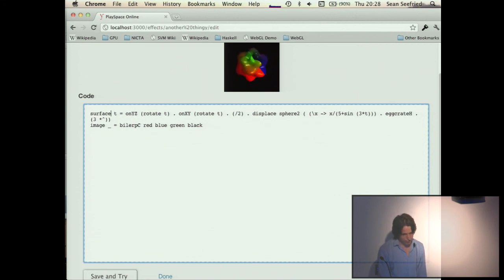What I'll do now is log in so that I can actually edit it. At the moment you just enter a dummy log in. Then I'll edit this and it brings up a little Haskell window. You can see it's two lines of code. You define a surface and an image. This is a function, T is for time. Then what I do is I rotate about the YZ plane and I also rotate about the XY plane.